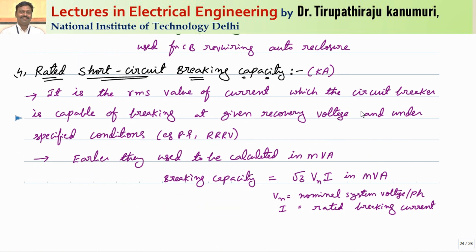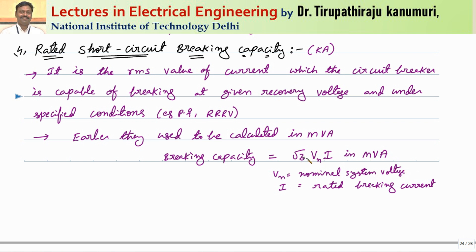The rated short circuit breaking capacity is the maximum current the circuit breaker can break under short circuit conditions. It is the RMS value of the current the circuit breaker is capable of breaking at a given recovery voltage under specified conditions — such as power factor, rate of rise of restriking voltage, and recovery voltage. Earlier it was expressed in MVA: breaking capacity (MVA) = √3 × nominal system voltage × rated breaking current. The nominal system voltage here is the line-to-line value.